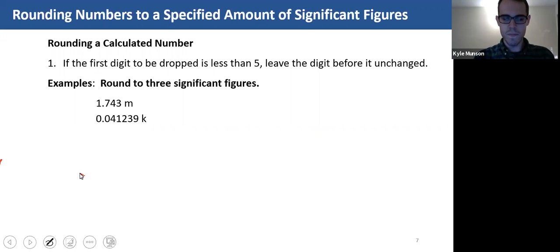The first rule for rounding a calculated number is if the digit to be dropped is less than five, leave the digit before it unchanged. So, here's an example.